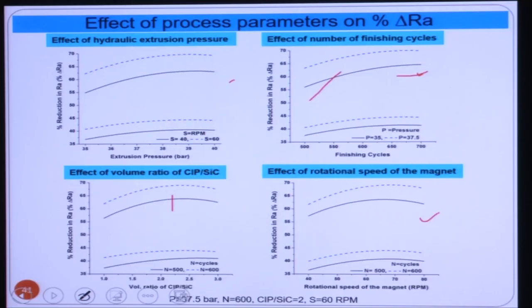With the volume ratio of CIP to SiC, surface finish improves up to an optimum value — increasing CIP gives abrasive particles more bonding strength for polishing — but beyond a certain limit, when CIP percentage is too high, abrasive particle concentration becomes too low, making polishing very difficult since without abrasives no polishing occurs.